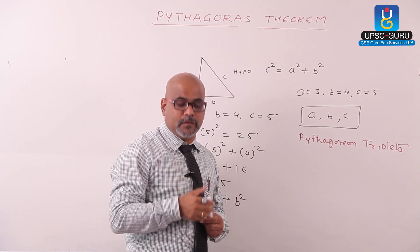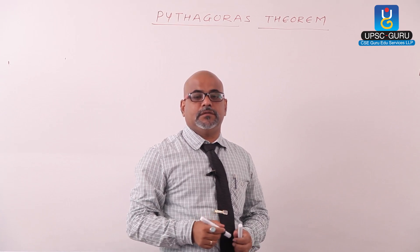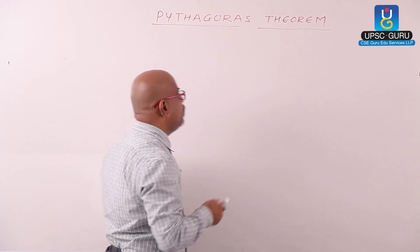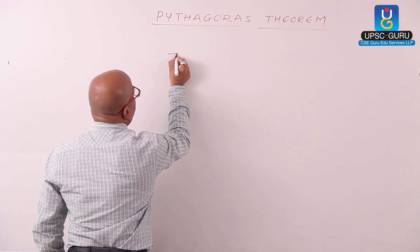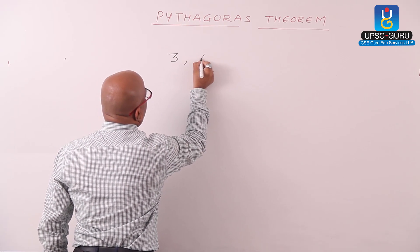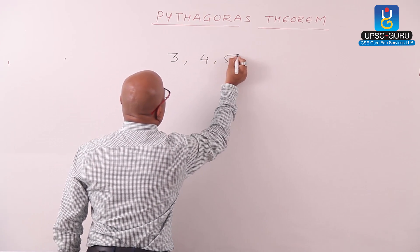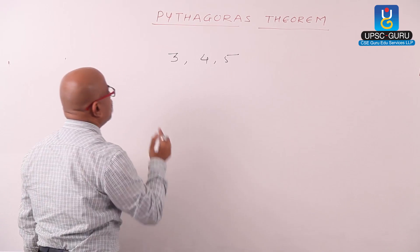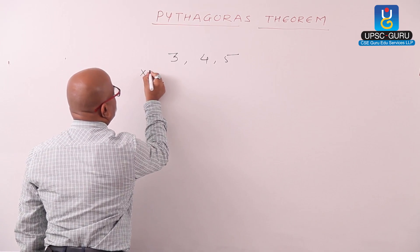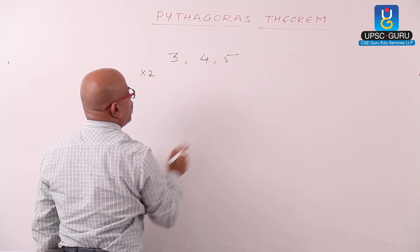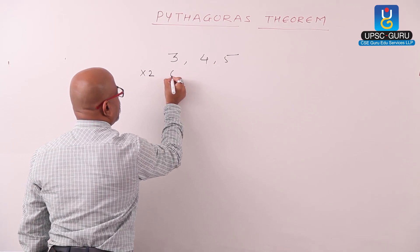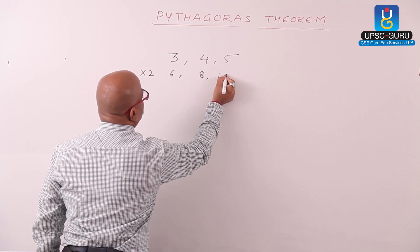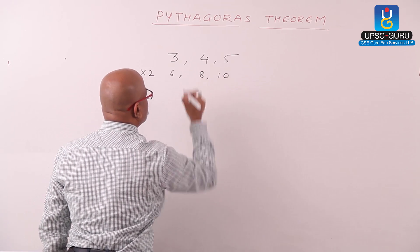Let us check some more common Pythagorean triplets. The first one we already know is 3, 4, and 5 — that is a Pythagorean triplet. If we multiply these numbers by 2, we get 6, 8, and 10.